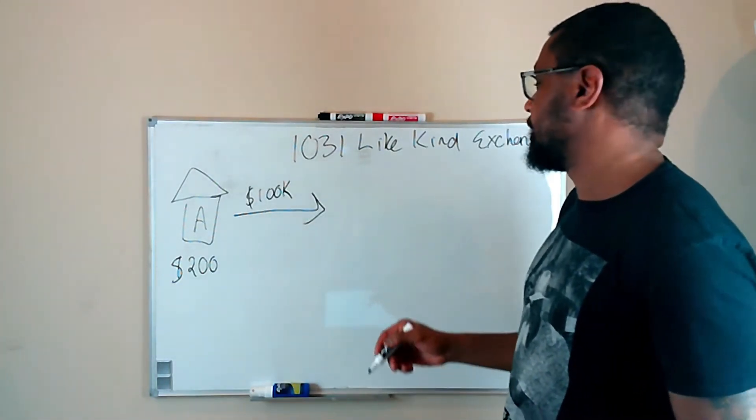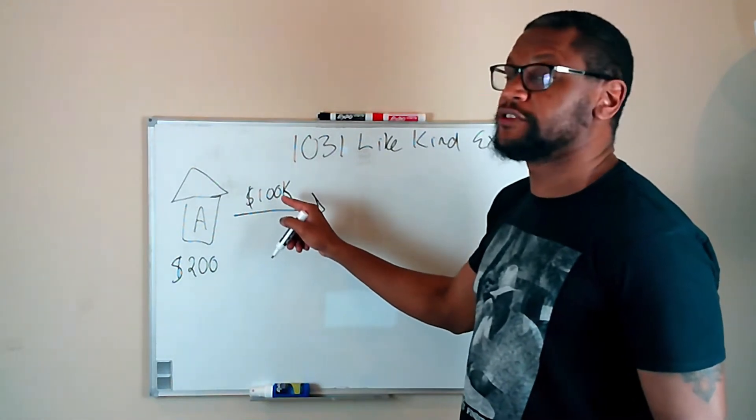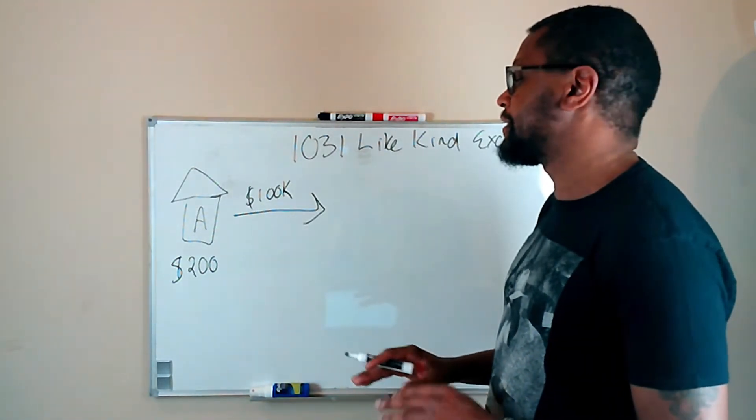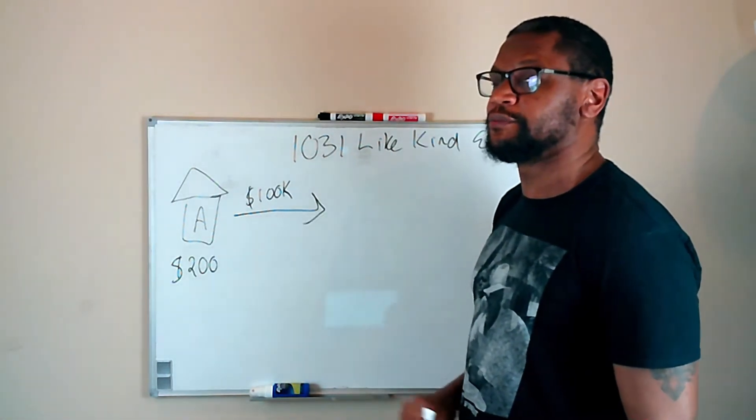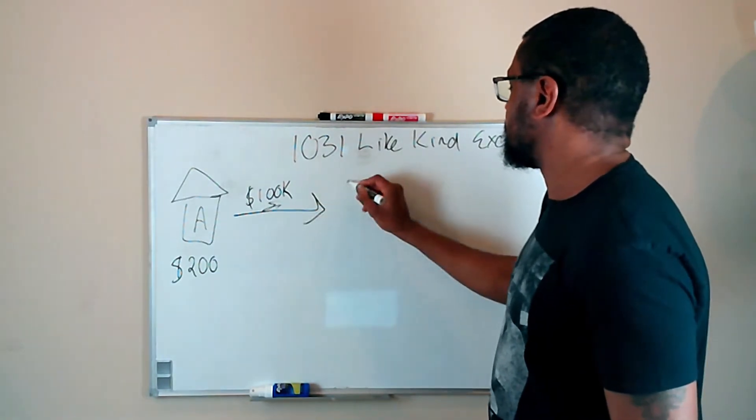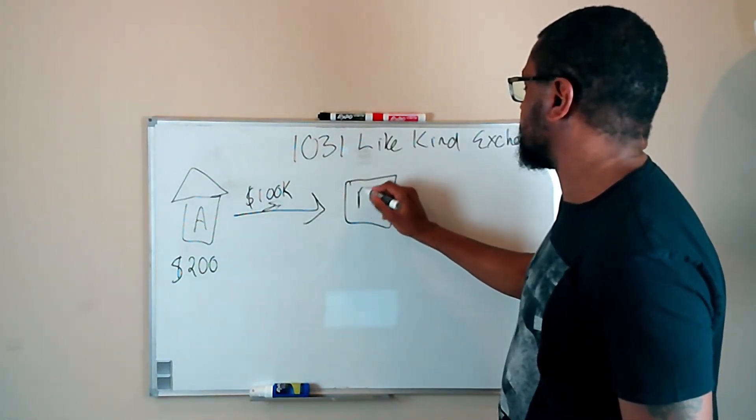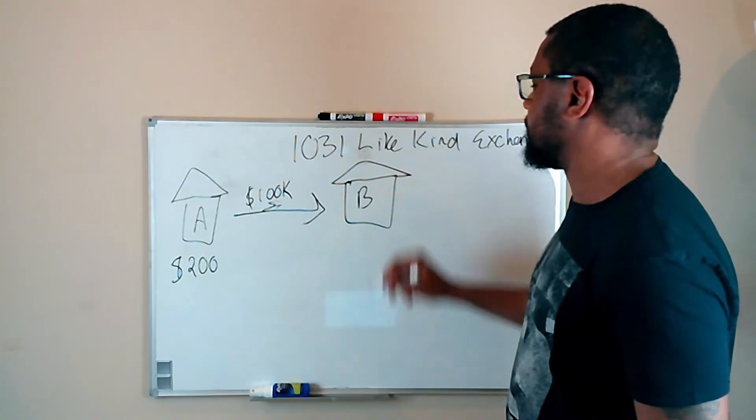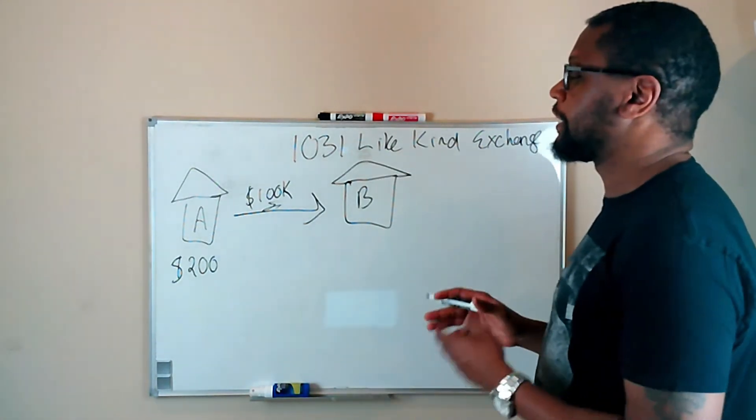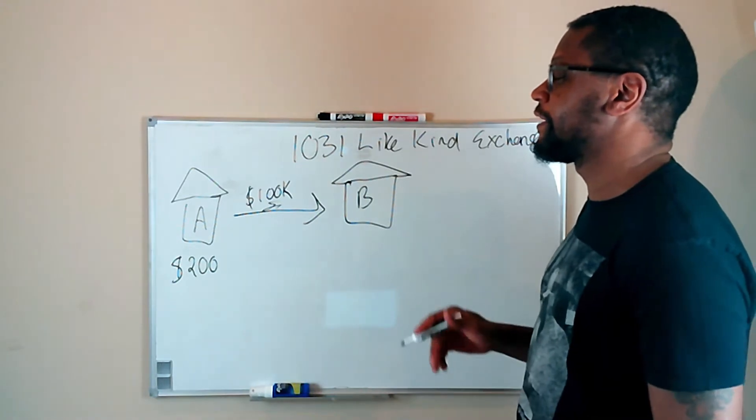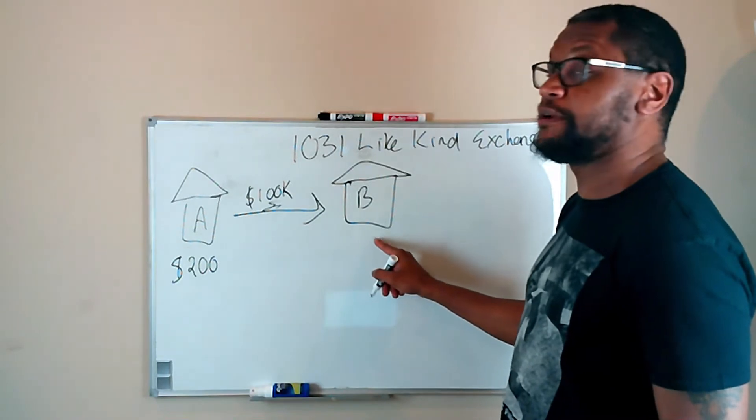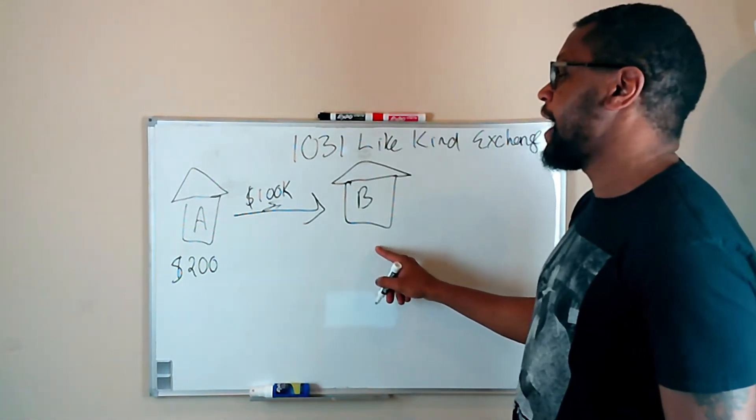With a like kind of exchange, I can use this $100,000 profit, defer any capital gains taxes that I would normally have to pay on this $100,000. I can defer that and use this entire amount to purchase rental property B. Now, there are some conditions to doing a like kind exchange. The first thing that has to apply is the purchase price of the like kind property, which would be rental property B, has to be worth more than the sale price of rental property A.